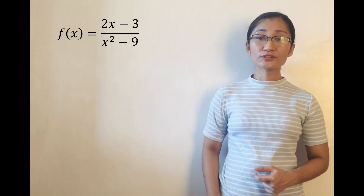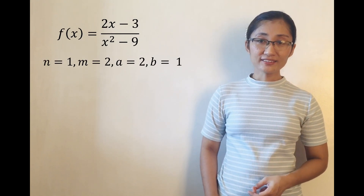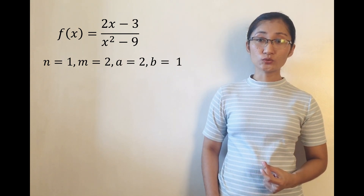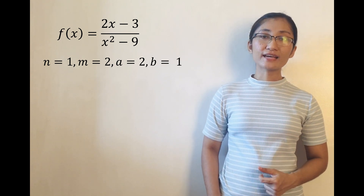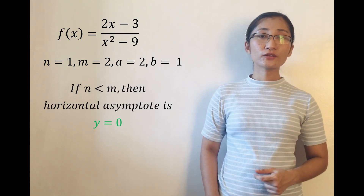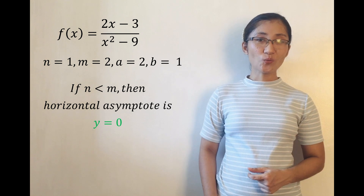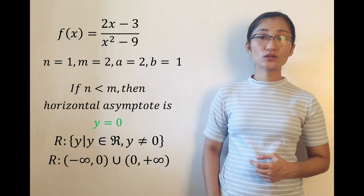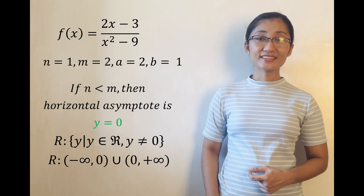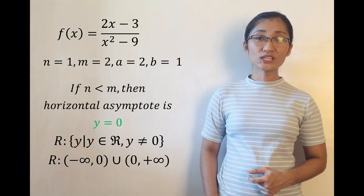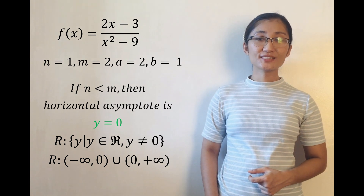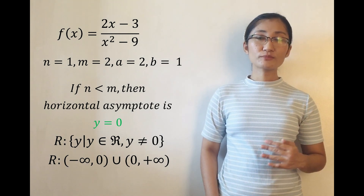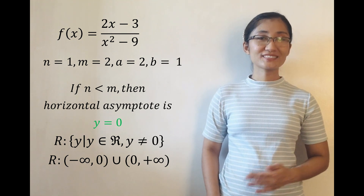Solving for the range: n equals 1, m equals 2, b equals 1, and a equals 2. Since n is less than m, the horizontal asymptote is y equals 0. Then y is not equal to 0, and the range is y such that y is an element of real numbers but y is not equal to 0, or the union of intervals from negative infinity to 0 exclusive, and from 0 exclusive to positive infinity.